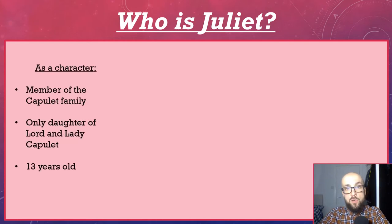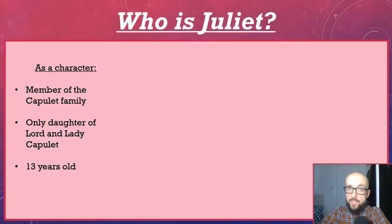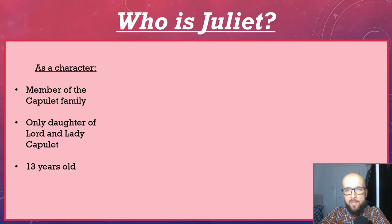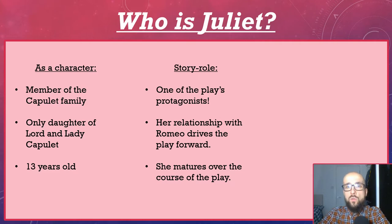As a character, Juliet is a member of the illustrious Capulet family — a high-status family in Verona. Vitally, Juliet is the only daughter of Lord and Lady Capulet, and so her relationship status is incredibly important to them. At the age of 13, it might seem strange to a modern audience that Juliet and marriage are mentioned in the same breath, but it is worth remembering that it was legal for women to marry as young as 12 in Shakespeare's time. Juliet's story role is pretty simple: along with Romeo, she is the play's protagonist, and her relationship with him, and all the obstacles thrown in its way, helps to drive the plot forwards. Additionally, she matures over the course of the play, a process that is absolutely central to our understanding of it.